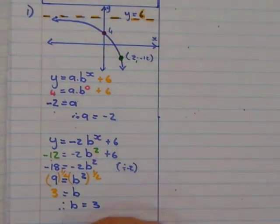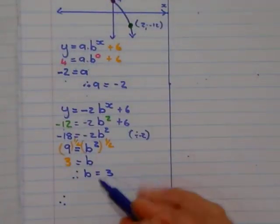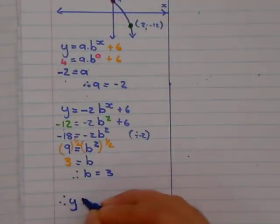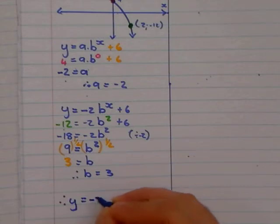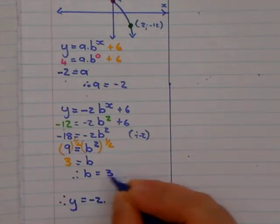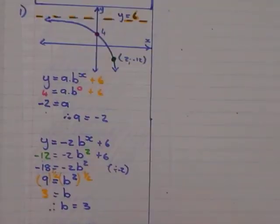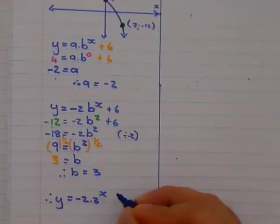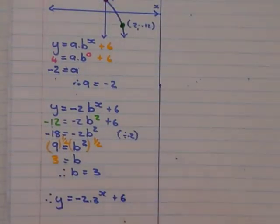Now we have the a, we have the b. Therefore, we have the function. It's y equals a is negative 2 times 3 to the power of x. And we know our q value is plus 6. And there's my equation.